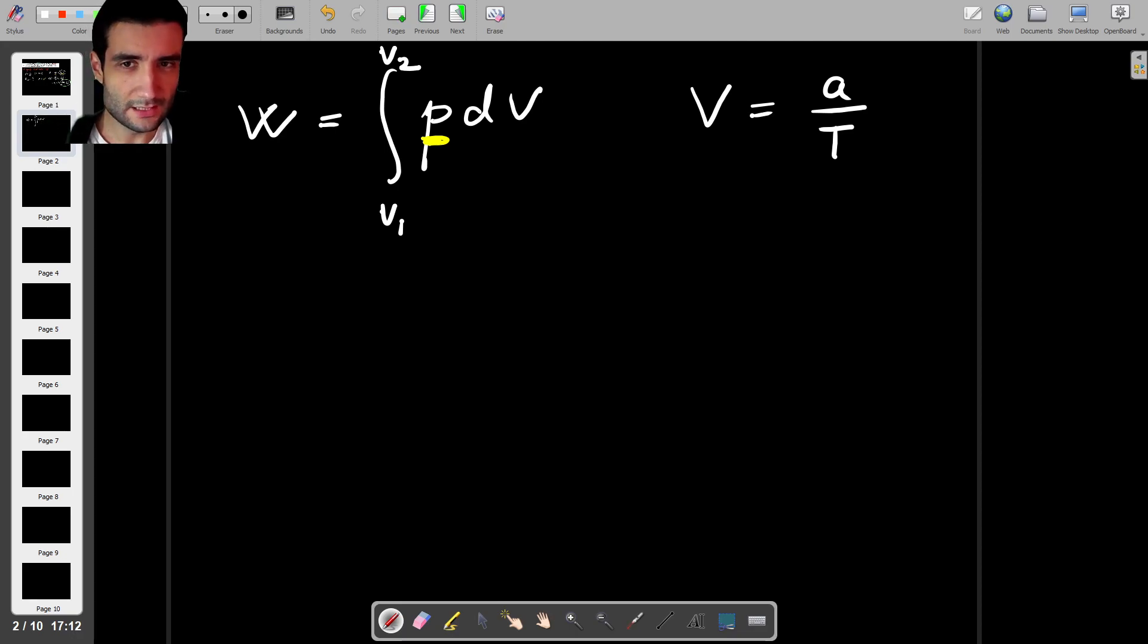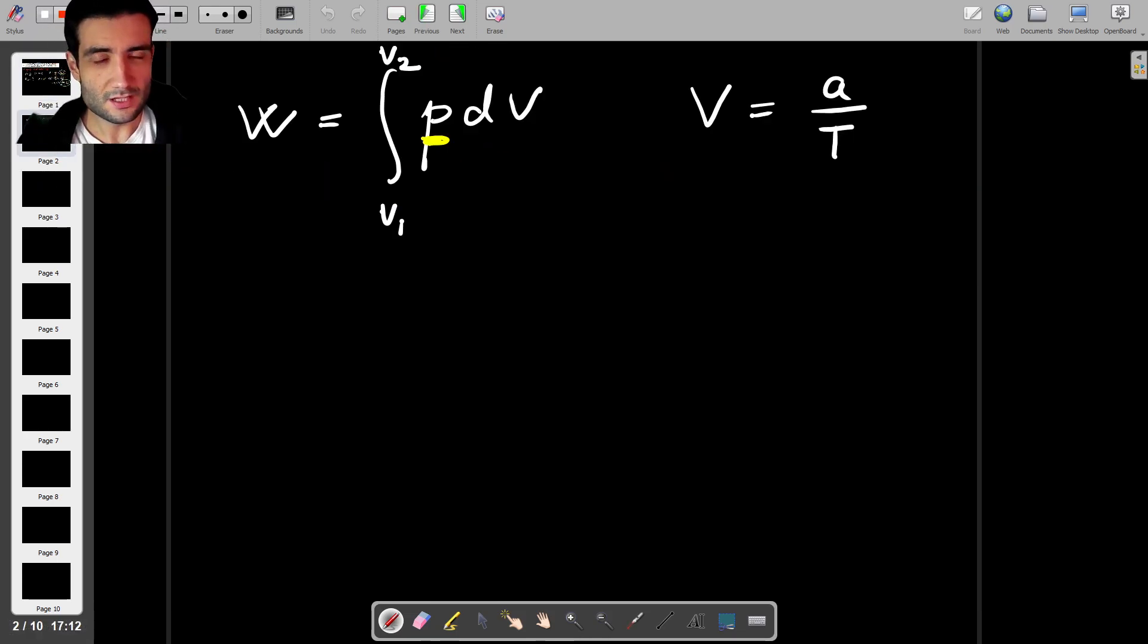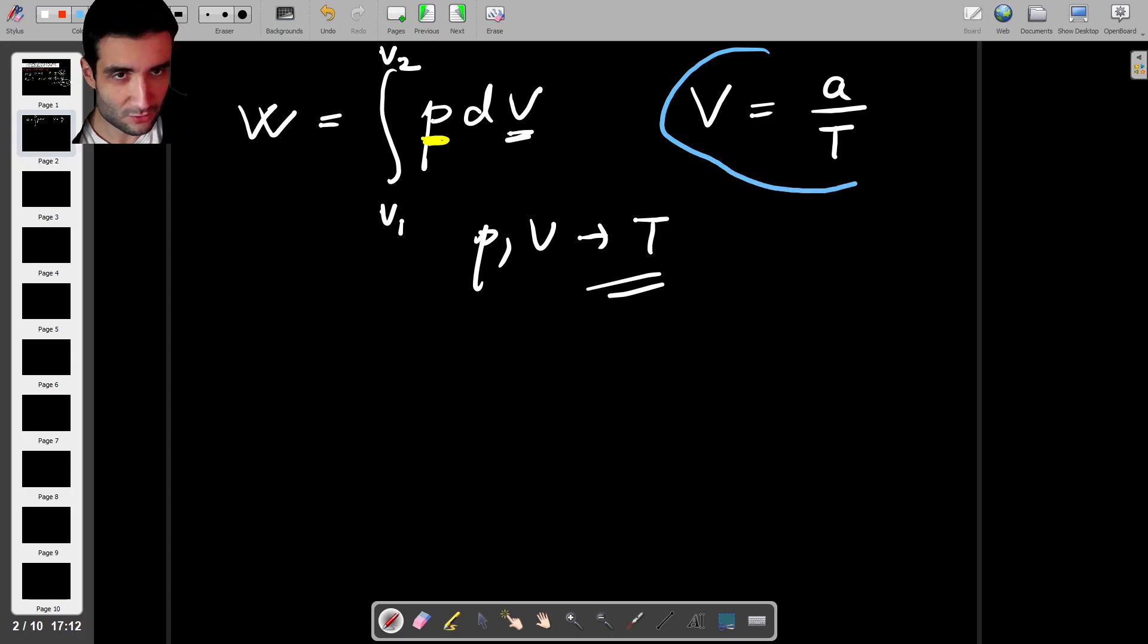But in this case I'll do it slightly differently because if you remember the question already tells us something about the temperature. So rather than expressing things in terms of volume I'm going to express pressure and volume in terms of temperature. So I need to find a way to do that. Well actually half of the work is already done because I know that volume is A over temperature. The only thing left to do is to express pressure in terms of volume as well. So how do we do that? We write the ideal gas law.